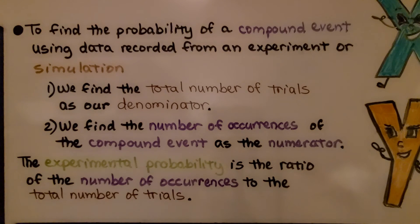To find the probability of a compound event using data recorded from an experiment or simulation, we find the total number of trials as our denominator. We find the number of occurrences of the compound event as the numerator. The experimental probability is the ratio of the number of occurrences to the total number of trials.